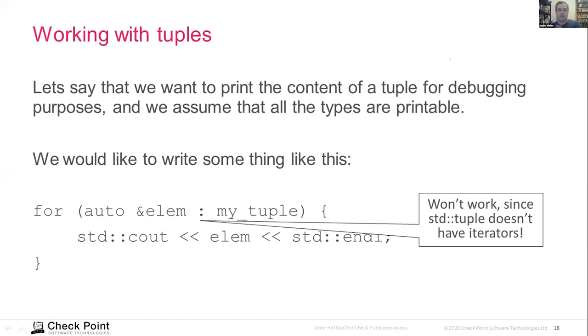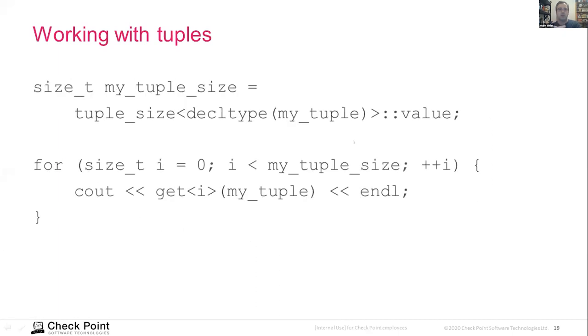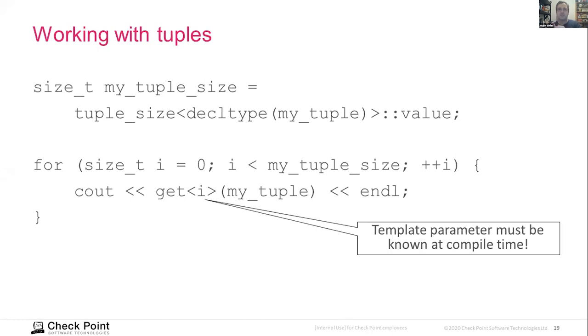Well, we've had loops before we had iterators. So let's try and rewrite the code. So now I need the tuple_size that I decided to describe before to get the size of the tuple. And I want to iterate from zero to the size of the tuple and use get on the tuple. And I'm sure some of you are already pointing out that this code can't possibly work because i is a variable here and not known at compilation time, which we need to do if we want to work with the code.